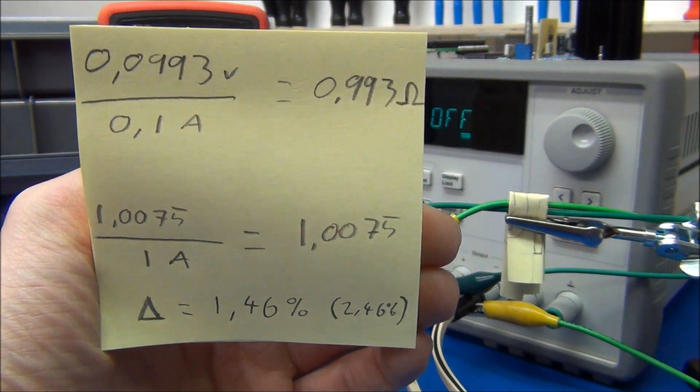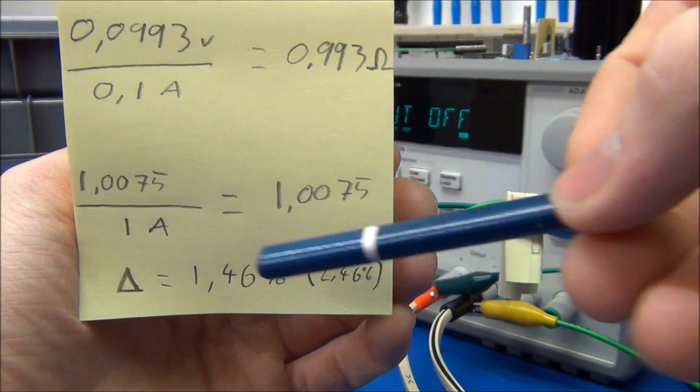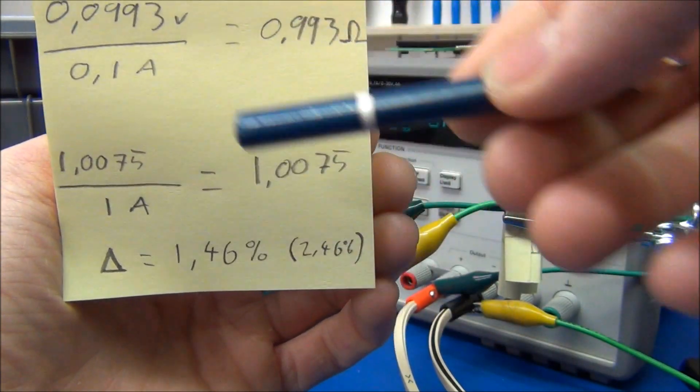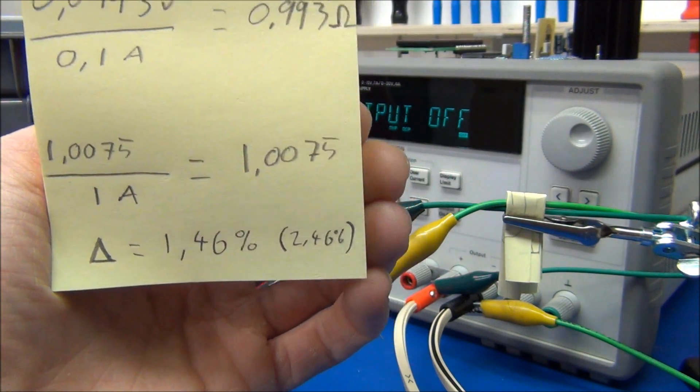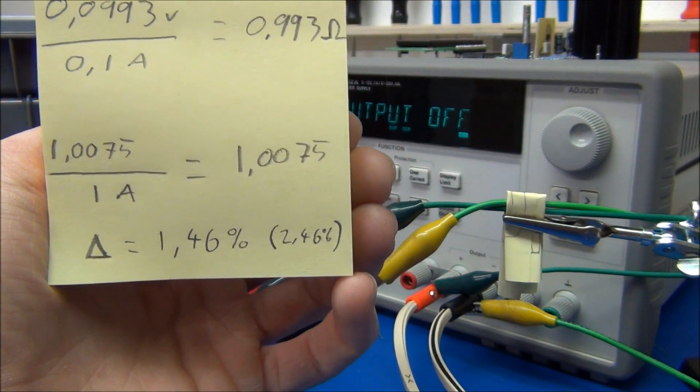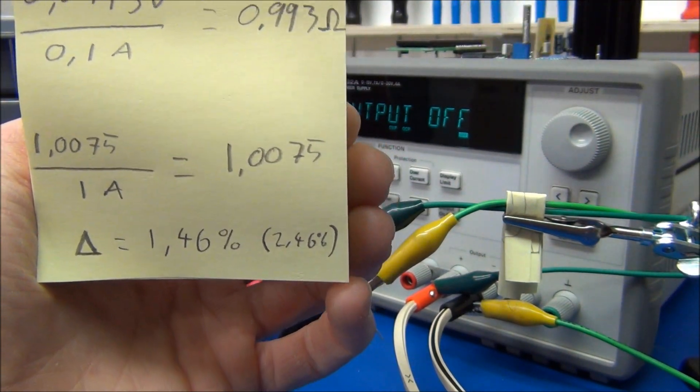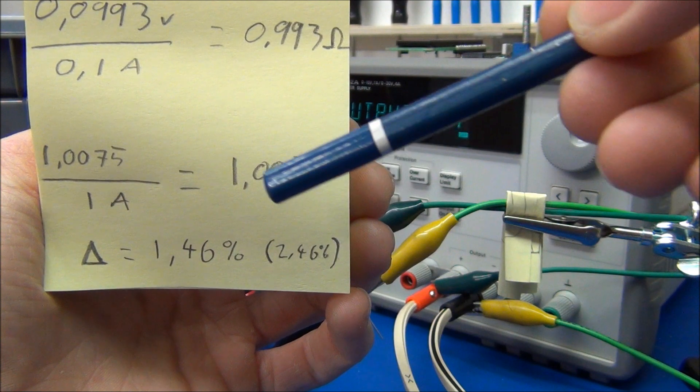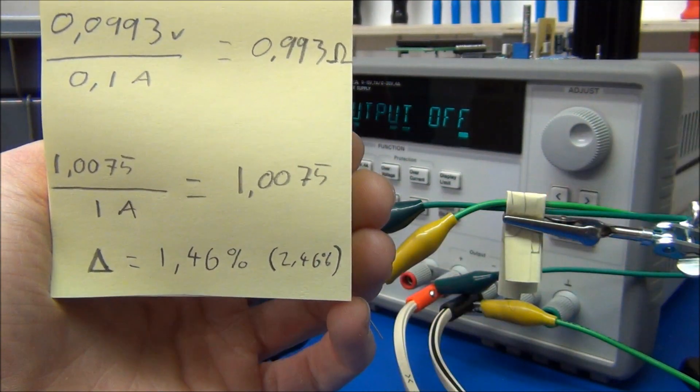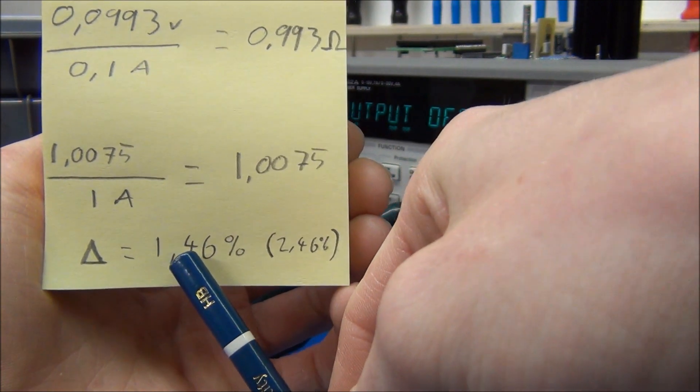So calculating our values is pretty easy. The first one was just directly known because we used 1A. The second one, you have to move the decimal 0.1 place because we used 100 milliamps. And to find the difference between the two, we take 100, divide it by the first number, multiply it by the second number, subtract the 100, and we get a difference of 1.46%.